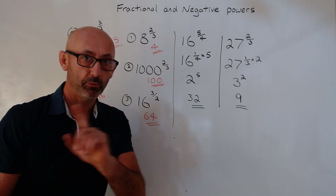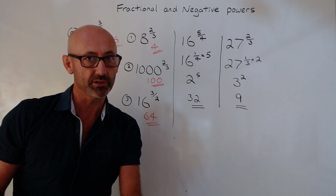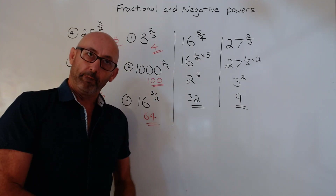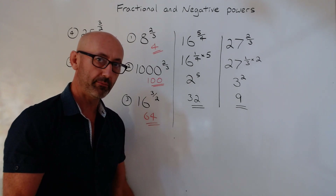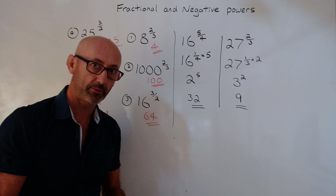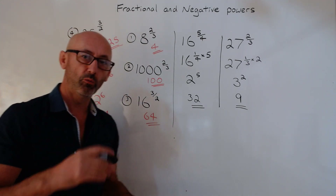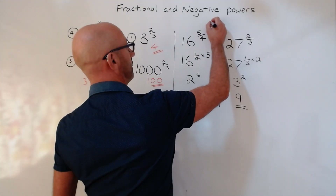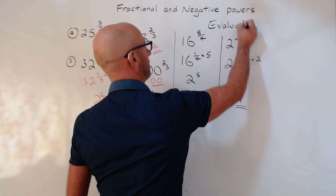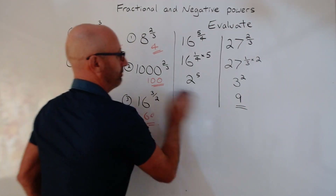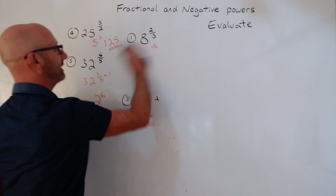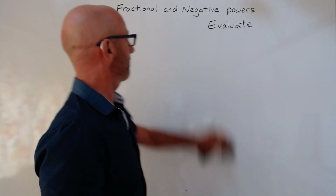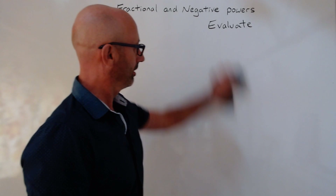We've got one more step and then we have finished fractional and negative powers. This is going to be worth probably three marks to you, which is a huge amount on the higher paper — especially when you only need 32 out of 80 to get a level six. These marks are really significant. One thing I failed to mention at the beginning: the key word the question is going to use is 'evaluate' — write it down now. Evaluate, which is just a posh word for 'what is the value of'.